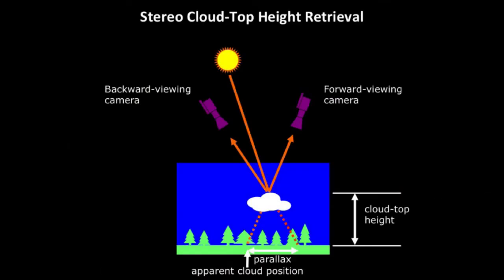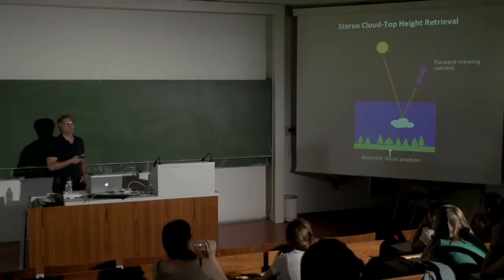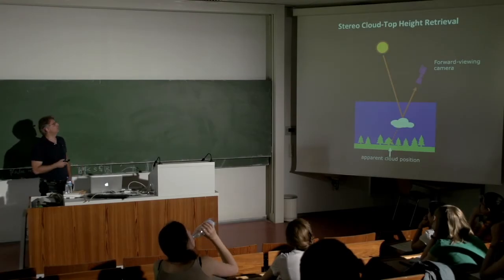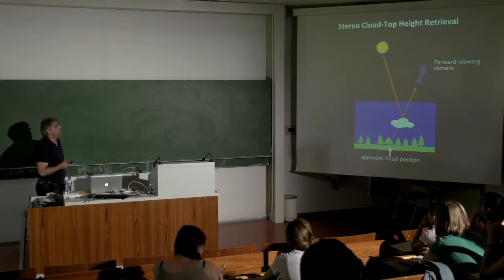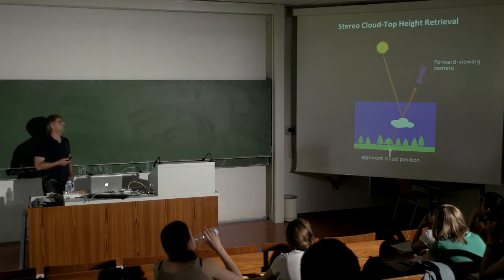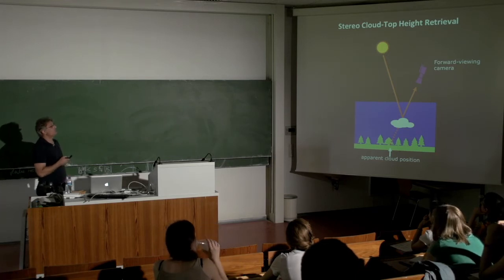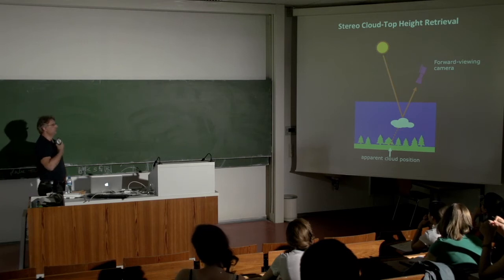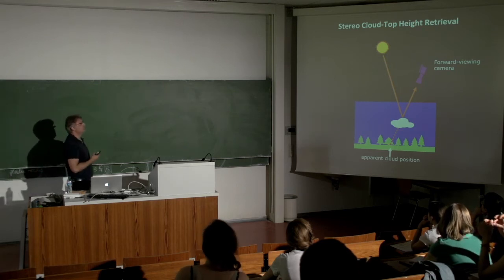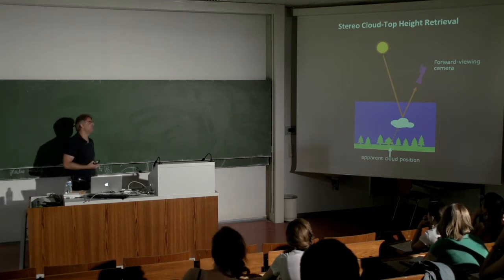One of the main products of MISR is cloud top height. It's a simple property but it's important, and as was shown yesterday, we still have some problems with cloud top height retrievals using traditional techniques. MISR uses a very simple stereo technique, which is basically what your eye does as you perceive depth — you look at a thing from two different perspectives.